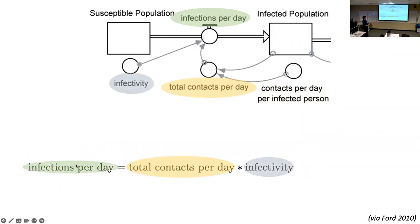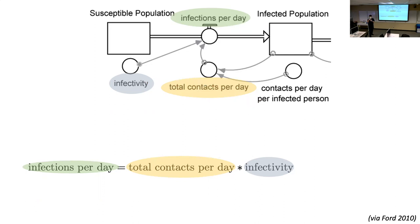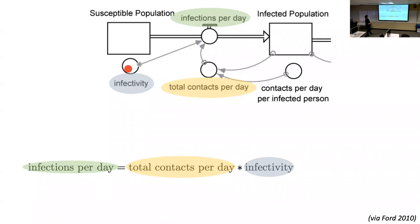Not all contacts will lead to transmission — you can bump into someone who's sick and not get sick yourself. So we need an infectivity parameter between zero and one representing the probability that a contact leads to an actual infection. If it's a very infectious disease, infectivity is close to one; if only one percent of contacts lead to infection, infectivity is 0.01. This can be estimated empirically through contact tracing.